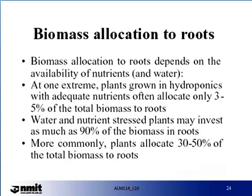The biomass allocation to roots will depend on the availability of nutrients and water. At one extreme, plants grown in hydroponics with adequate nutrients often allocate only 3 to 5% of total biomass to roots. Water and nutrient-stressed plants may invest as much as 90% of biomass in roots. More commonly, plants allocate 30 to 50% of total biomass to roots. This is certainly worth considering from an economic perspective. If your crop is an above-ground crop and you are putting most of your resources below ground, you are losing your optimal. However, if you do not put adequate resources into below ground, you will not be able to utilise your nutrients effectively and will lose economically in your above-ground yield. It is a compromise.